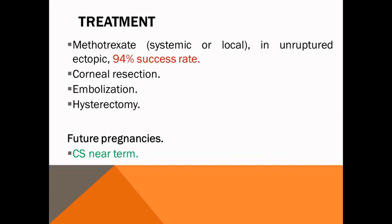Treatment: we try as much as possible to conserve and preserve the uterus. First, we can use methotrexate in a systemic or local manner — the success rate is high, more than 90%. Second option is cornual resection. Other options include embolization, and the last option is the radical option. For future pregnancy, the patient should deliver by cesarean section.